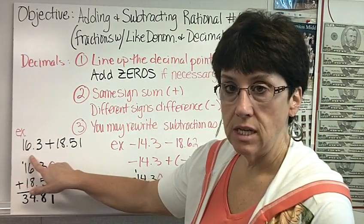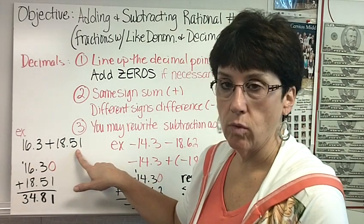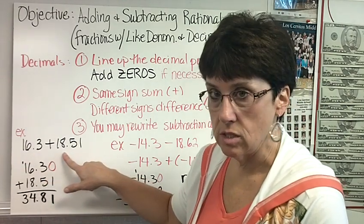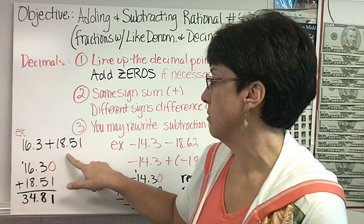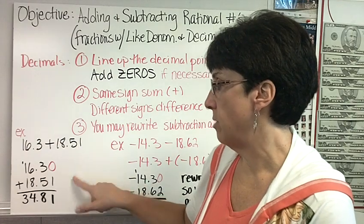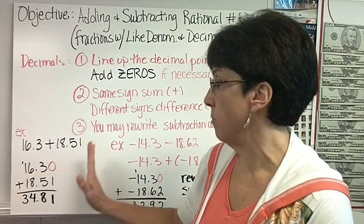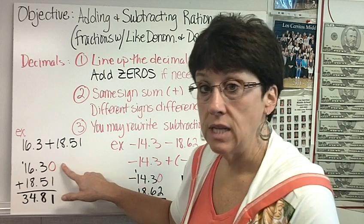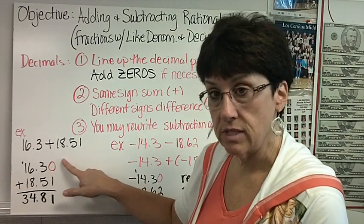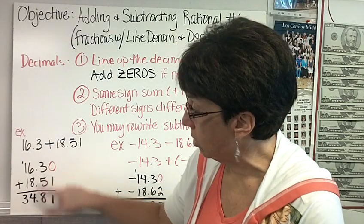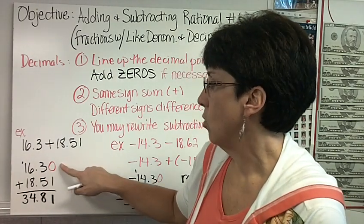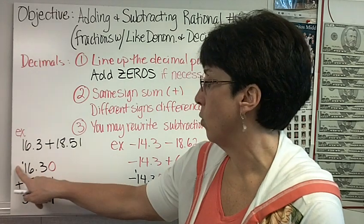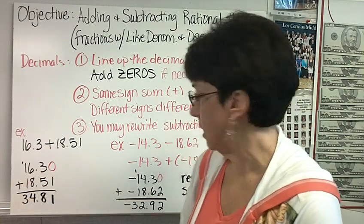So here's an example: 16.3 plus 18.51. Always write the problems vertically so that we can add them better. So I write 16.3, 18.51, lining up the decimal points and I notice I need to add a 0 after the 3 so that I have the same number of digits after each decimal point so the columns are lined up. So 0 plus 1 is 1, 3 plus 5 is 8, bring down my decimal point. 6 plus 8 is 14, carry the 1. 1 plus 1 plus 1 is 3. And we're done.